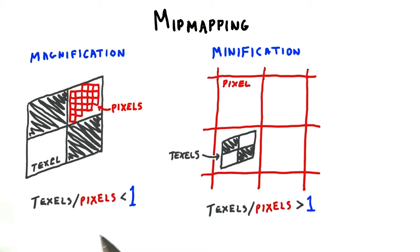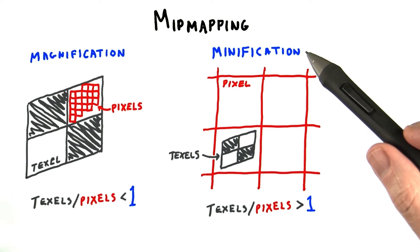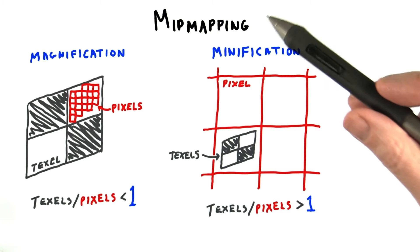If this ratio is less than one, magnification happens and the mag filter takes effect. If this ratio is greater than one, minification is happening. This is where mipmapping comes in.